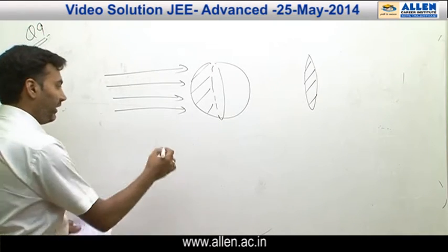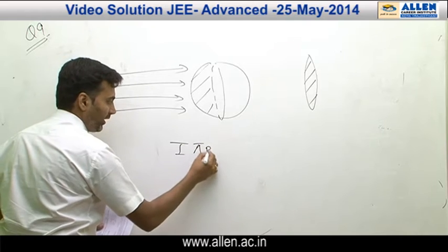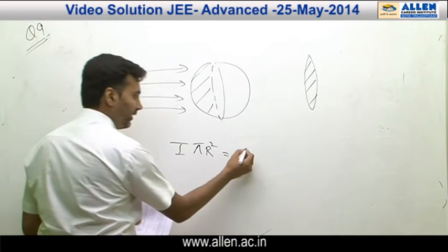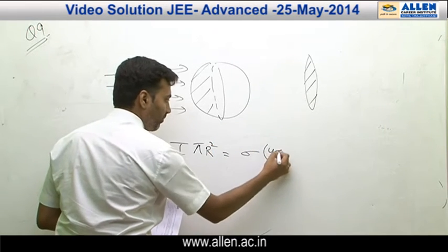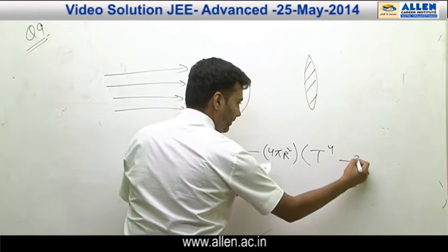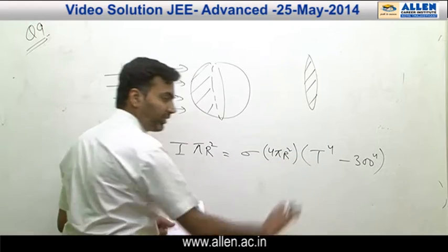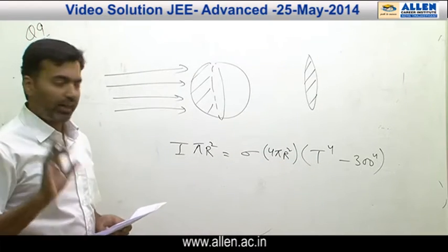So balancing these two, we have I into the projection area, which is to be pi R square, is to be balanced by sigma A, that is 4 pi R square, T to the power 4 minus 300 to the power 4. T being the final temperature that is to be achieved at equilibrium.